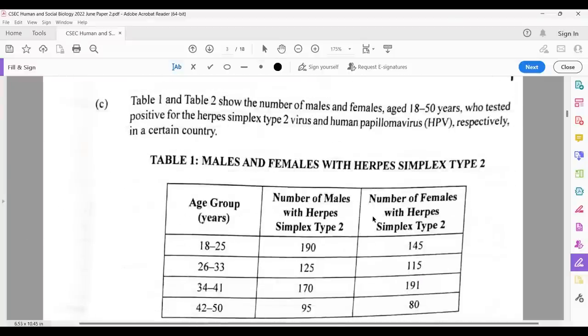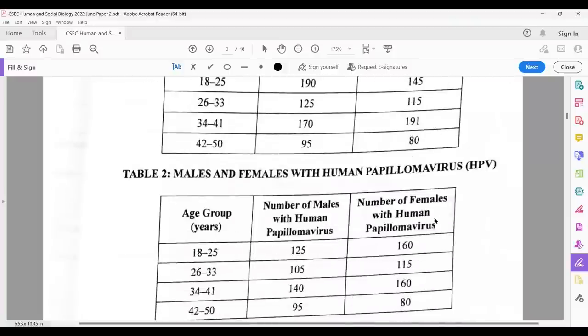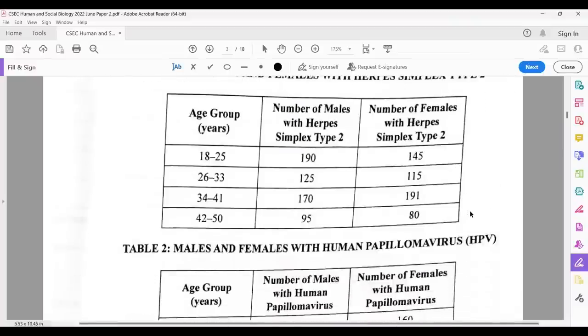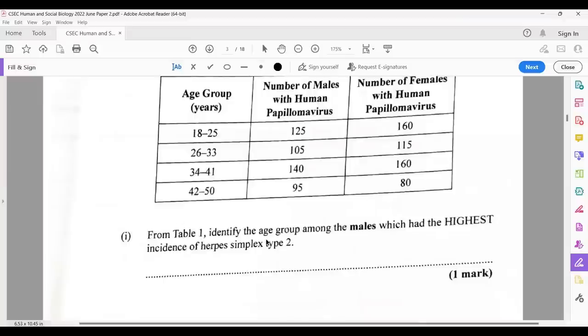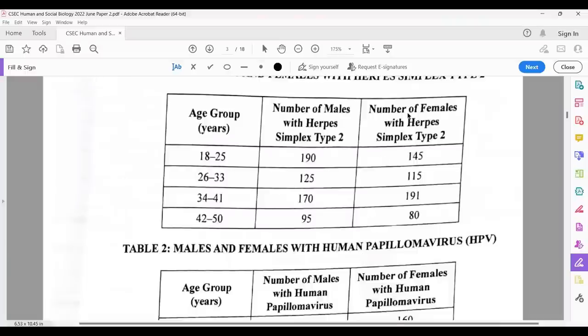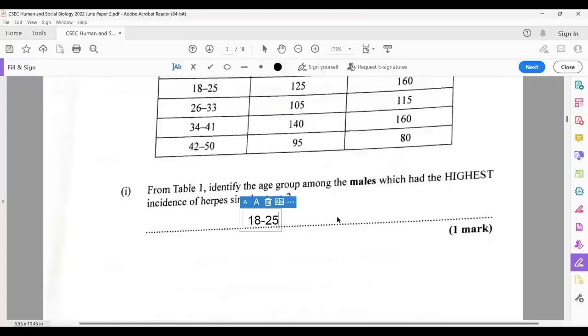Table one and table two shows the number of male and females aged 18 to 50 who tested positive for the herpes simplex virus type 2 and the human papilloma virus. From table one, identify the age group among males which had the highest incidence of herpes simplex type 2. They tell you go to table one for this. We're looking at table one. They're asking for males so we could ignore the females part. And we just look for the highest number and we say what group is that. So that is age group 18 to 25. So we write that.